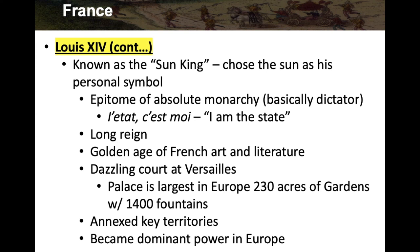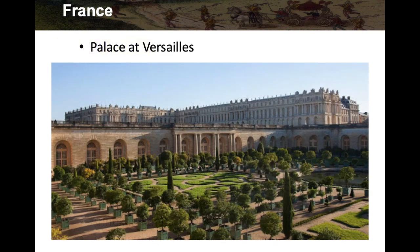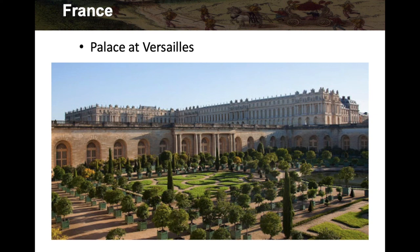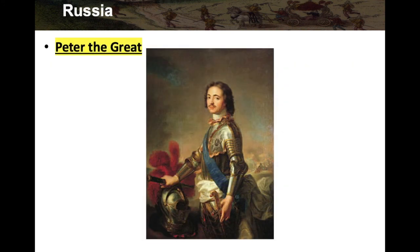Louis XIV annexed key territories and became the dominant power in Europe. Germany was still a bunch of little kingdoms with their own princes, and Italy was separated by the Alps, but France was really the dominant power. There's a picture of the Palace of Versailles — just massive — and you can see part of the garden. We'll get back to France under the French Revolution, but for now we move on to Russia.